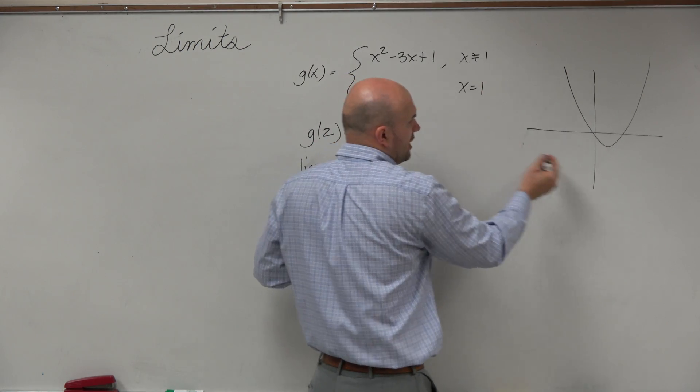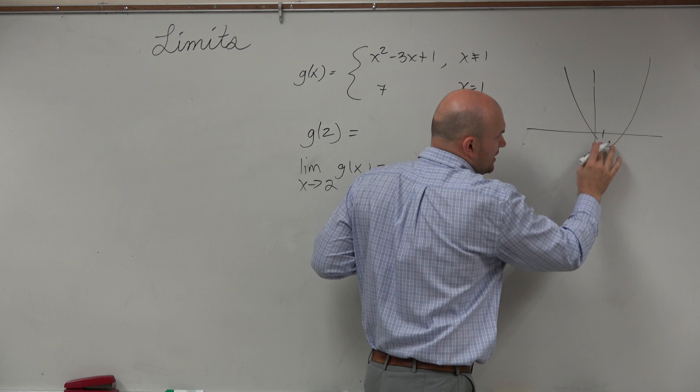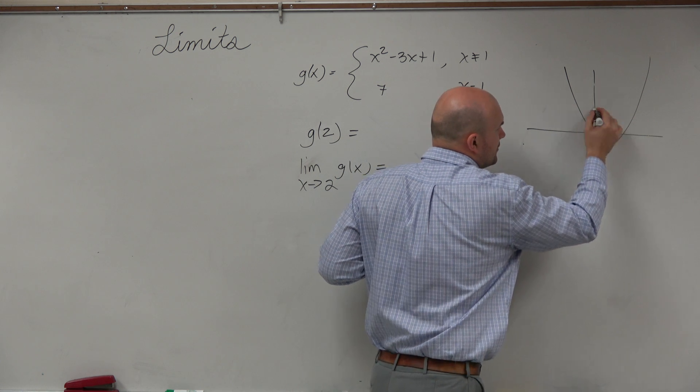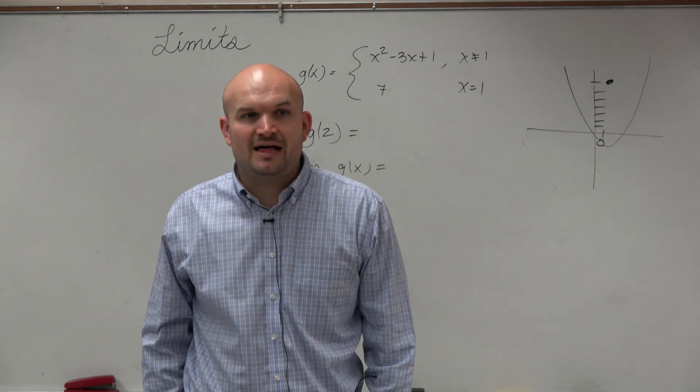But it cannot equal 1. So at 1, it equals 7. So that means at 1, we have a hole, and then at 7, we have this nice little point, that plotted value.